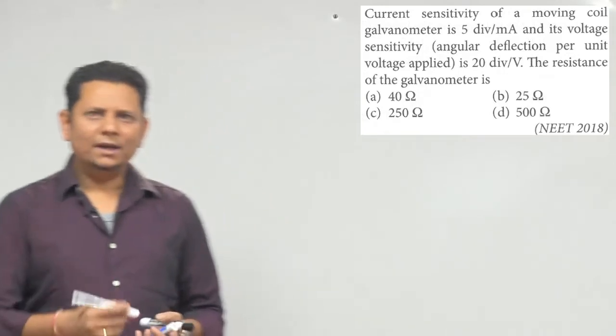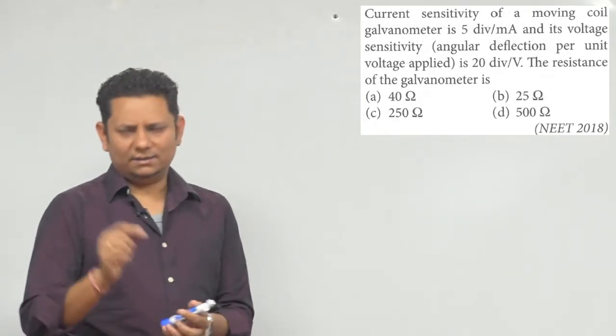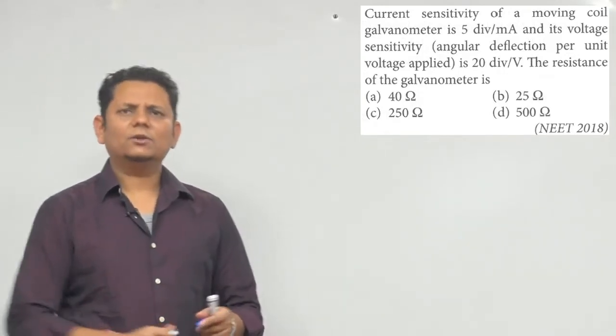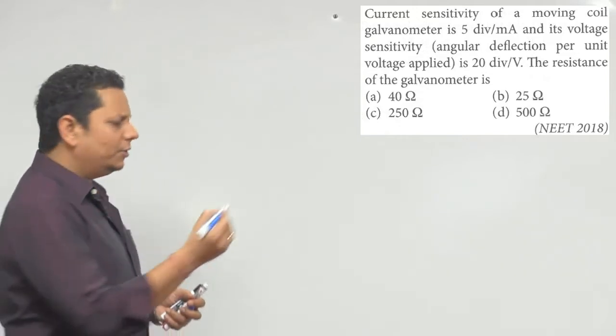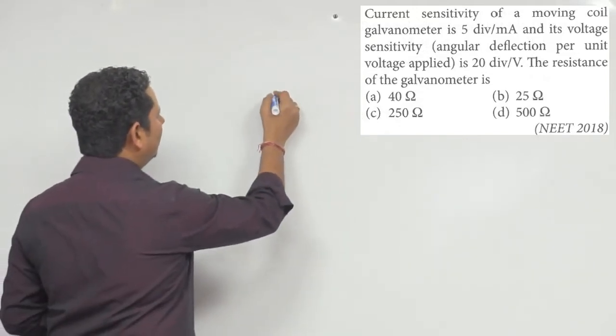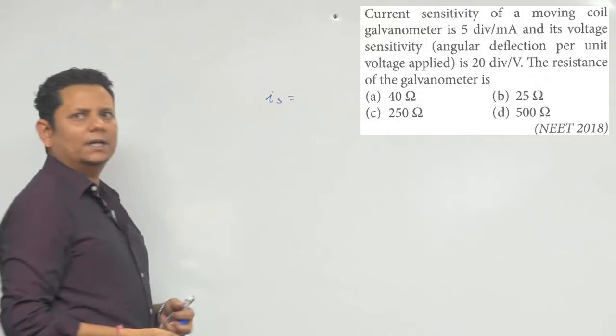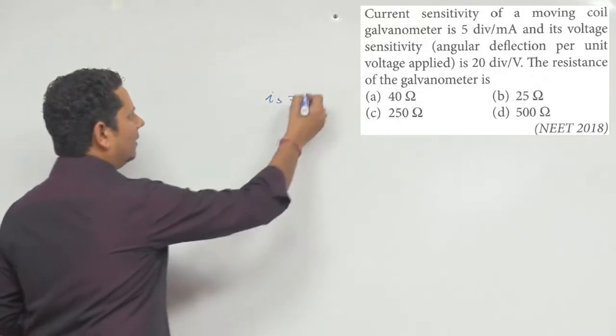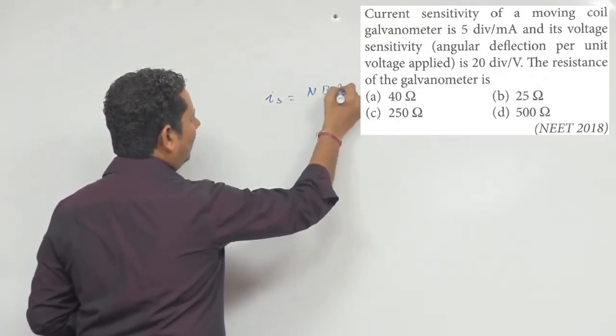Simple सवाल है, अगर galvanometer के concepts clear हैं तो आपको पता है कि current sensitivity की जब हम बात करते हैं galvanometer का, उसको हम लिखते हैं nba divided by c, यह आपका current sensitivity आती है.